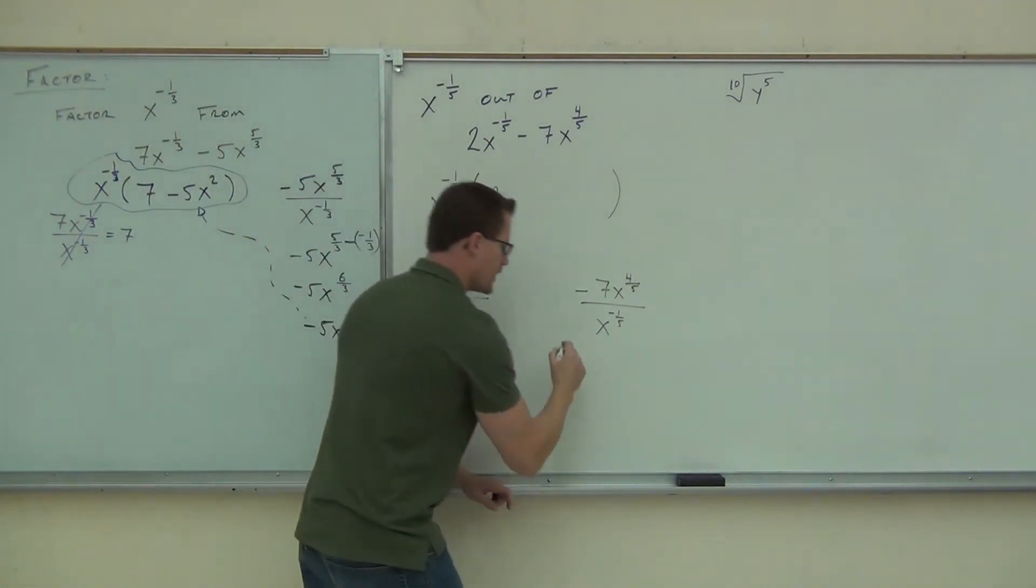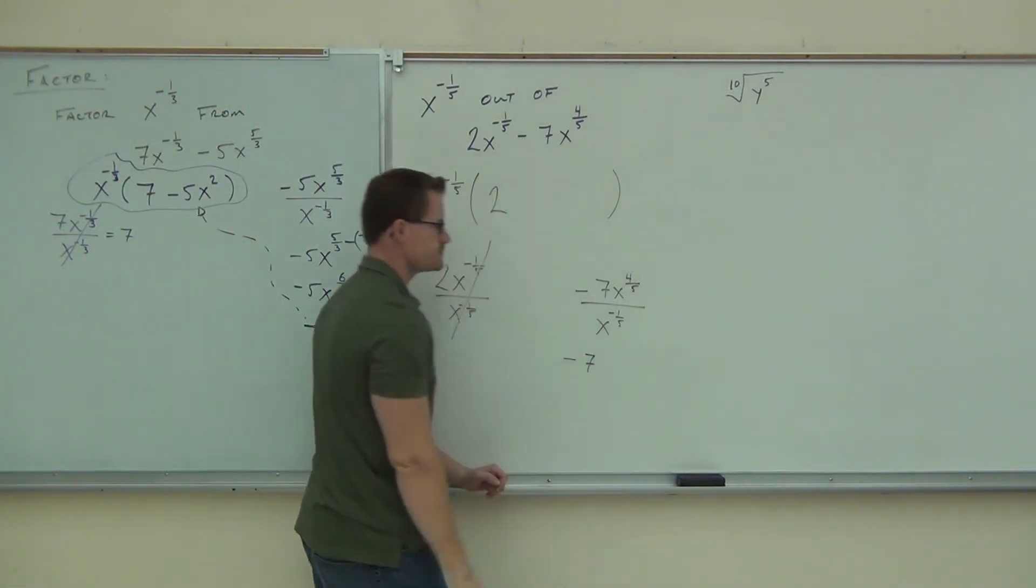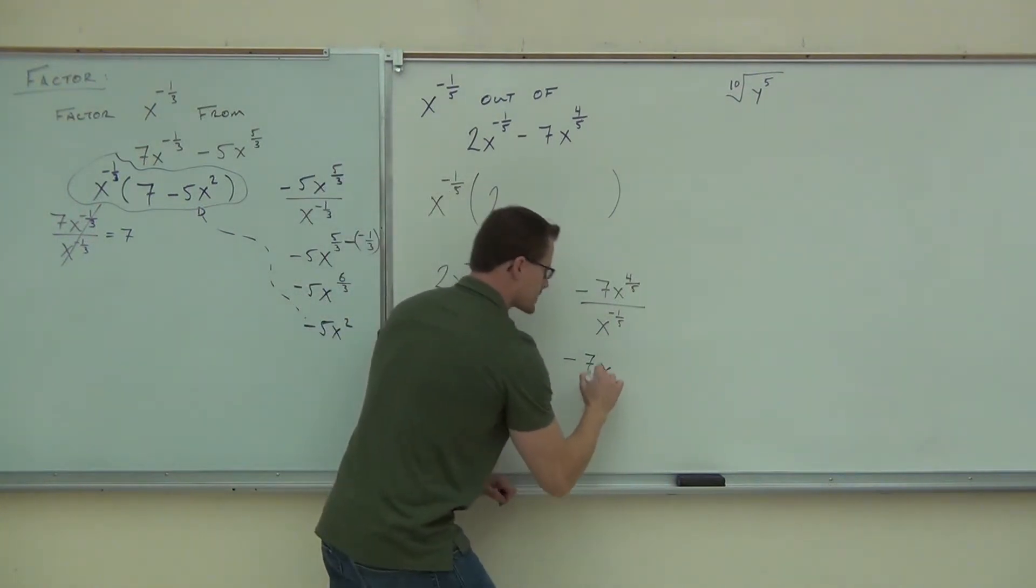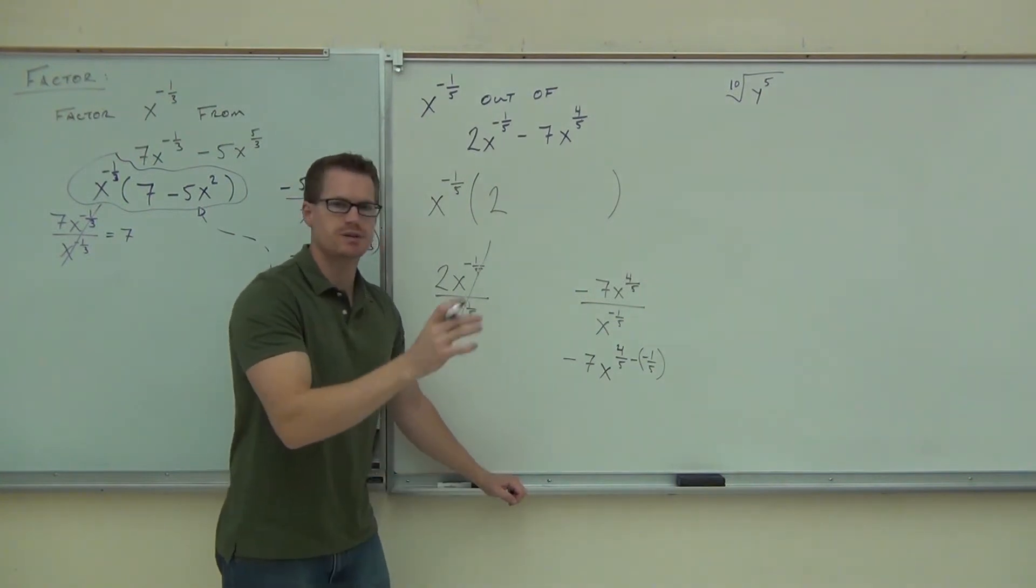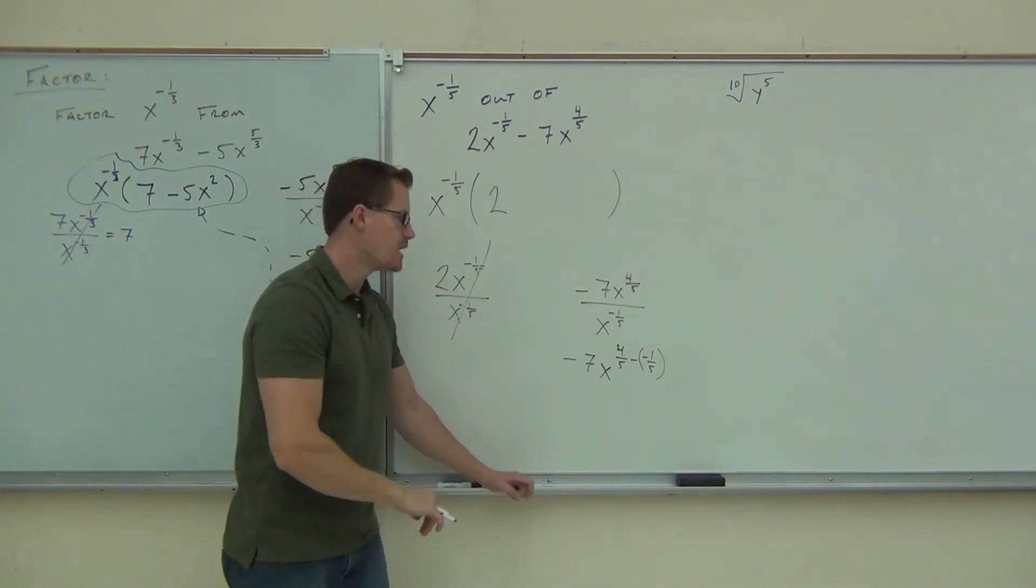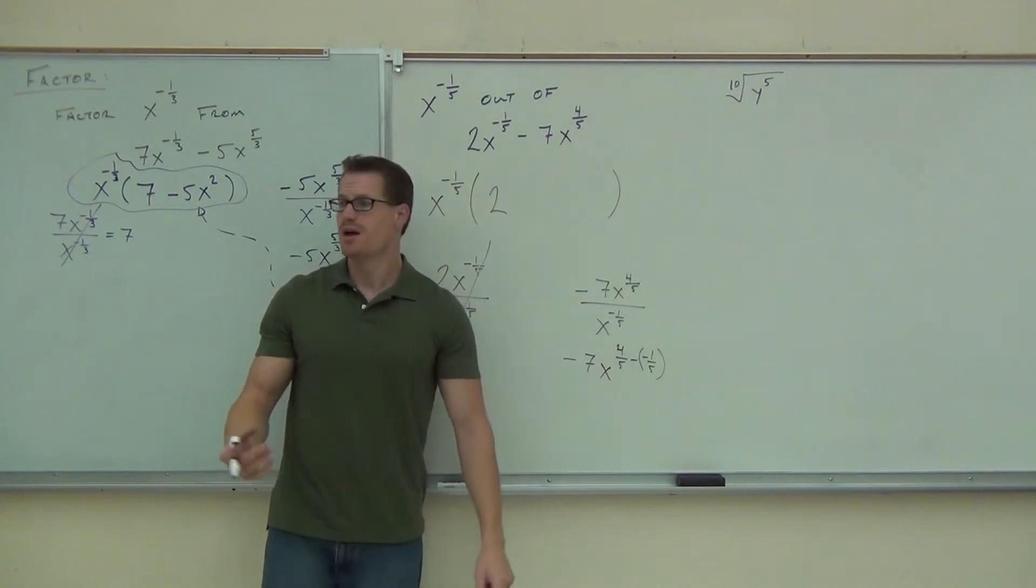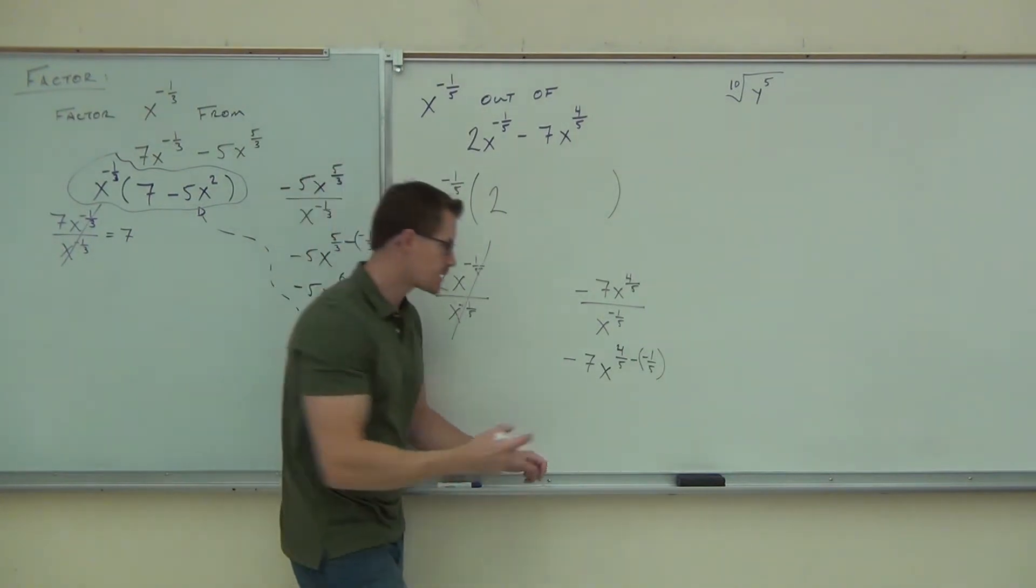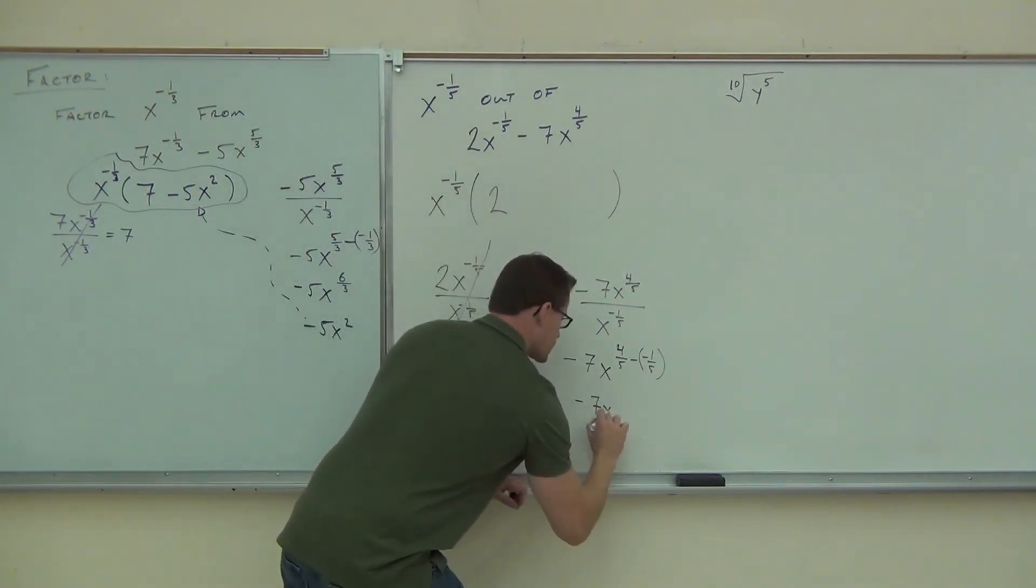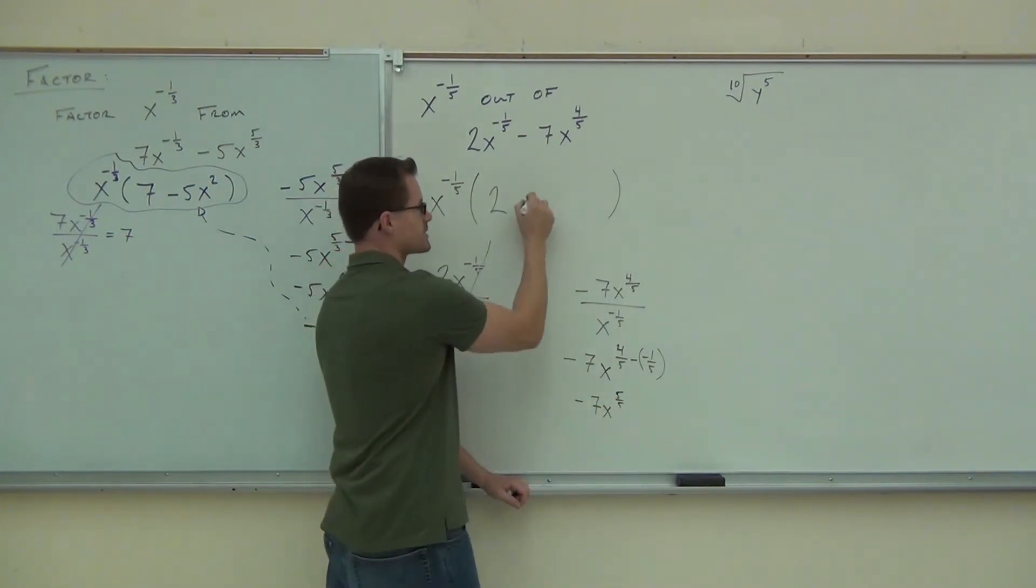Now, the other one's a different story. I know I'm going to have a minus seven. I know I'm still going to have x because they're not matching up exactly, but I have the four-fifths minus negative one-fifth. I'm subtracting those exponents since we're dividing common bases. Four-fifths minus negative one-fifth, minus a negative is still addition. We're going to get how much? Five-fifths, or we're going to get one. Negative seven x to the first power, or just minus seven x.